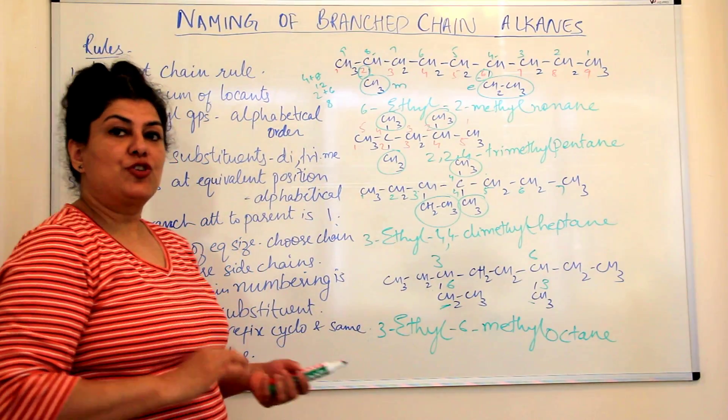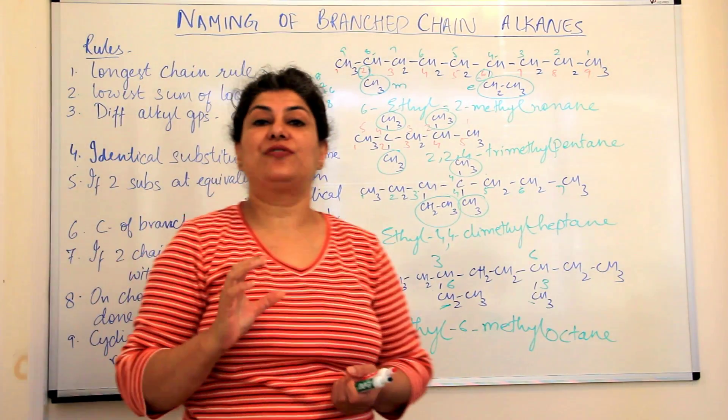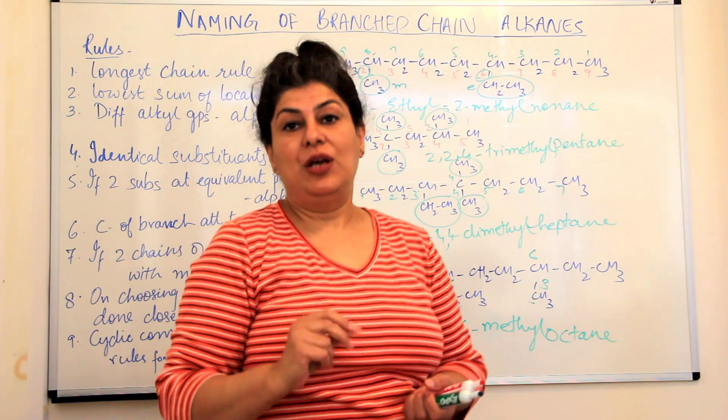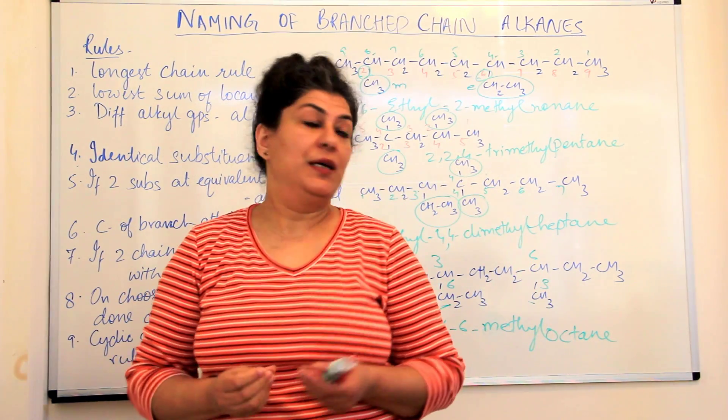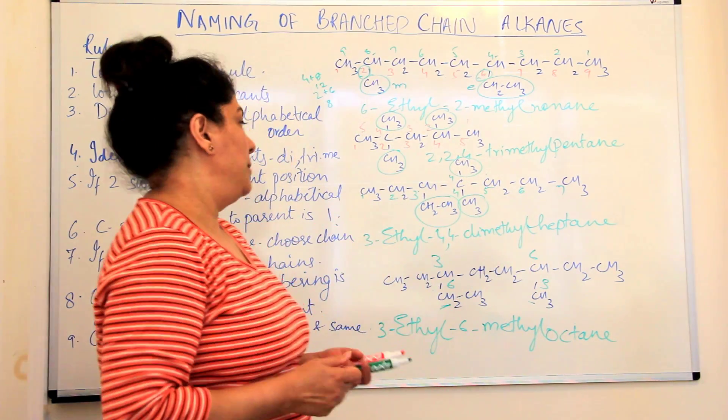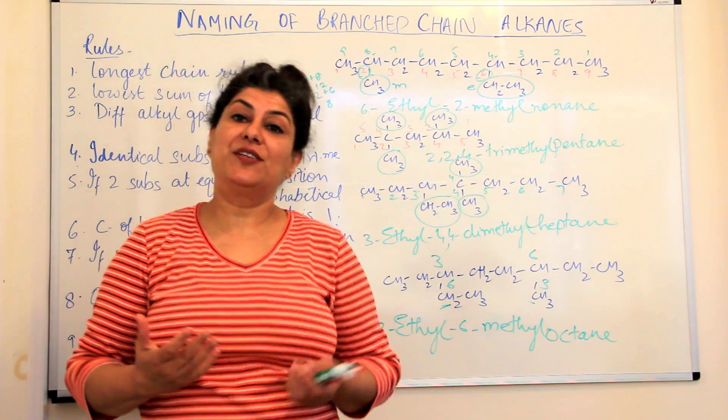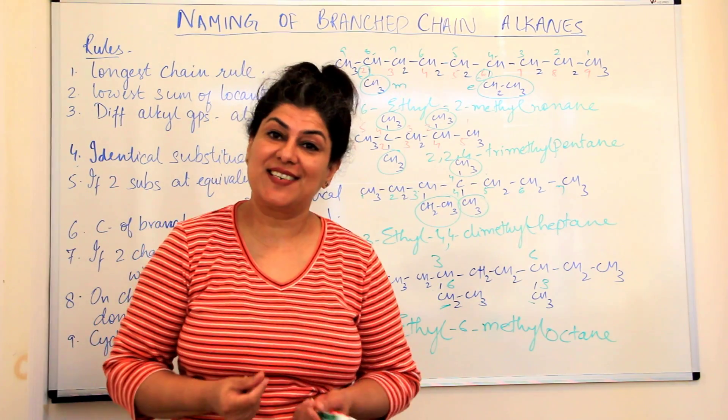So these are the first five rules for naming branched chain alkanes. We follow another four rules to name these hydrocarbons, but those will be covered in the next video.